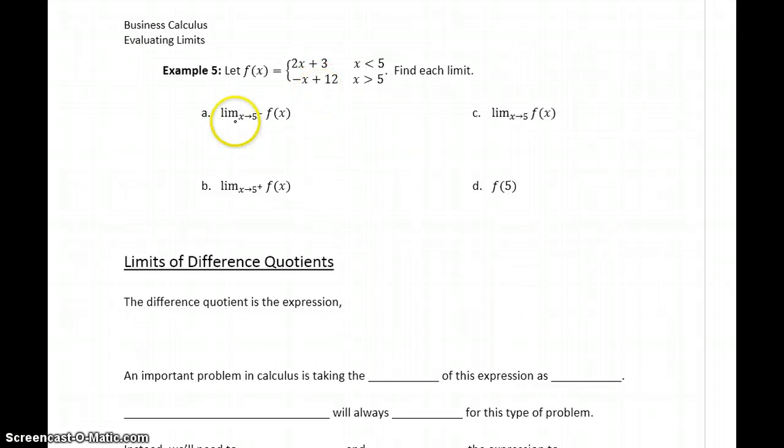What we need to consider is the limit as X approaches 5 from the left hand side, so it means we're starting at negative infinity working our way up to 5, considering values of X that are something less than 5.